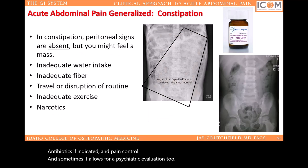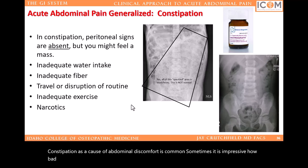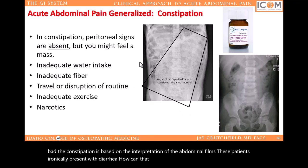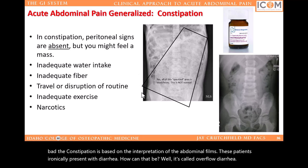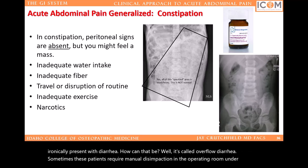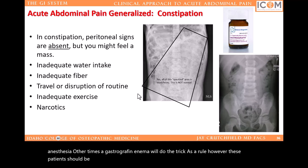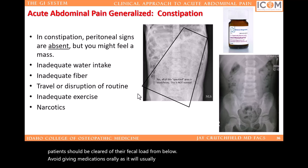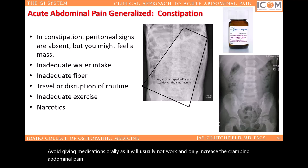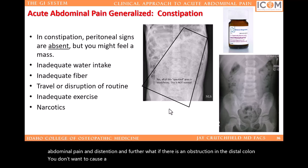Constipation as a cause of abdominal discomfort is common. Sometimes it is impressive how bad the constipation is based on the interpretation of abdominal films. These patients, ironically, present with diarrhea — it's called overflow diarrhea. Sometimes these patients require manual disimpaction in the operating room under anesthesia. Other times, a gastrografin enema will do the trick. These patients should be cleared of their fecal load from below. Avoid giving medications orally, as it will usually not work and only increase the cramping abdominal pain and distention. And further, what if there is an obstruction in the distal colon? You don't want to cause a perforation by trying to clean out such a patient from above with cathartics.